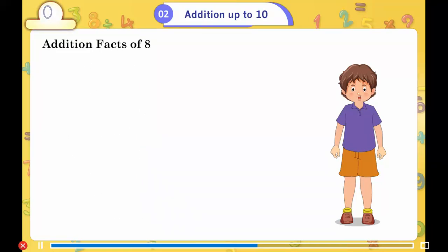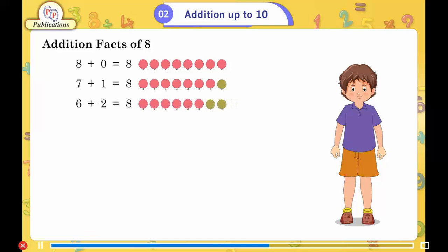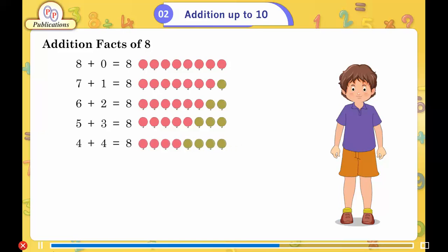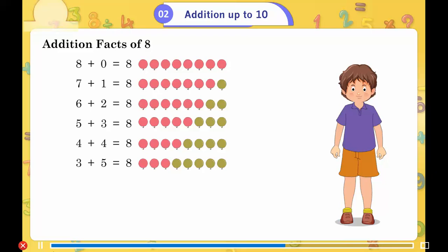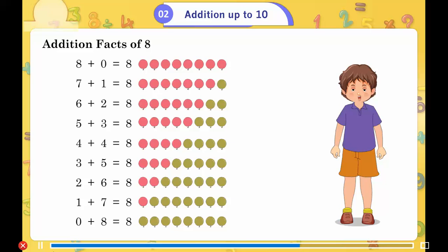Addition facts of 8: 8 plus 0 is equal to 8, 7 plus 1 is equal to 8, 6 plus 2 is equal to 8, 5 plus 3 is equal to 8, 4 plus 4 is equal to 8, 3 plus 5 is equal to 8, 2 plus 6 is equal to 8, 1 plus 7 is equal to 8, 0 plus 8 is equal to 8.